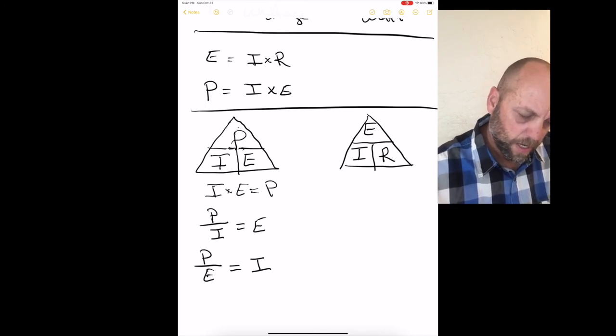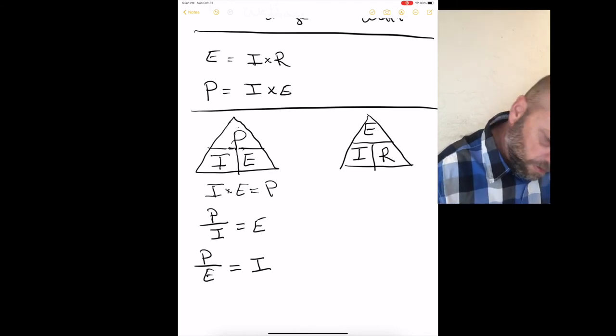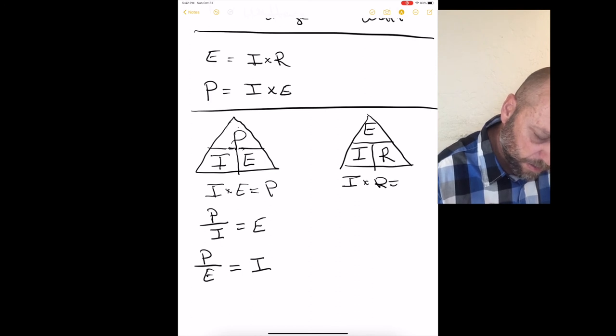So there again, over here on the Err, if you're looking for volts, you would cover up the E on top of the triangle, and it would be I times R equals E.